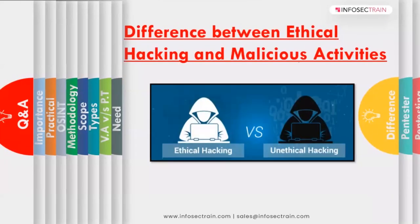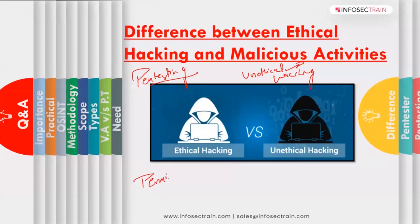What is the difference between ethical hacking and malicious activities? We can call malicious activity unethical hacking. The first key difference is permission. In malicious activity, you don't have permission and don't even ask for it. In ethical hacking, you get permission to perform the pen testing or hacking. In ethical hacking, we follow a process — there is whole documentation, and a scope is set.